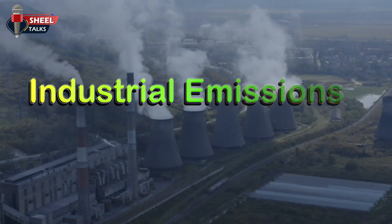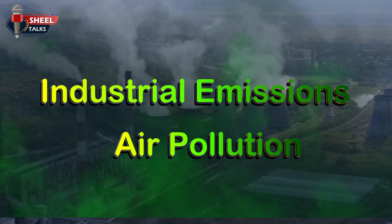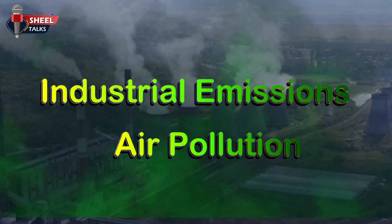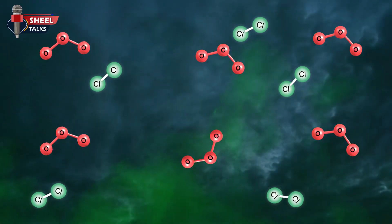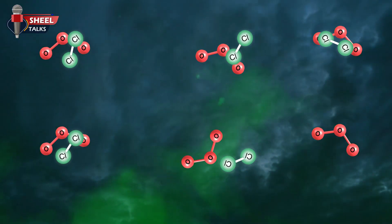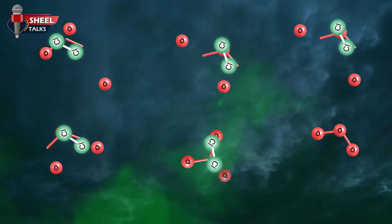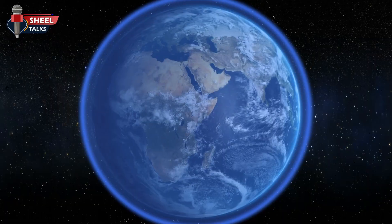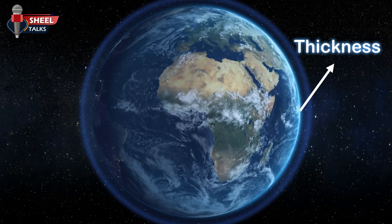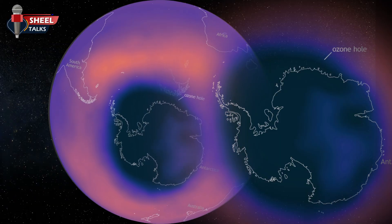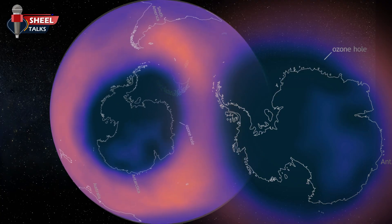Still, industrial emissions, air pollution, and some chemicals continue to damage the ozone layer. When these gases reach the atmosphere, they react with ozone molecules and destroy them. Because of this, the thickness of the ozone layer is decreasing, and today we can clearly see a large hole over Antarctica.